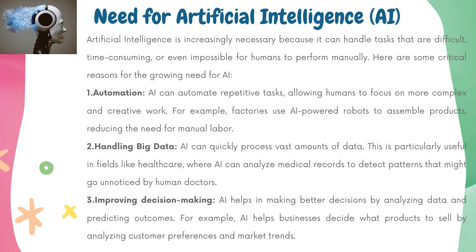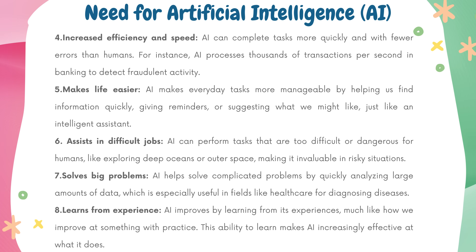Automation: AI can automate repetitive tasks, allowing humans to focus on more complex and creative work. For example, factories use AI-powered robots to assemble products, reducing the need for manual labor. Handling big data: AI can quickly process vast amounts of data. This is particularly useful in fields like healthcare, where AI can analyze medical records to detect patterns that might go unnoticed by human doctors. Improving decision-making: AI helps in making better decisions by analyzing data and predicting outcomes. For example, AI helps businesses decide what products to sell by analyzing customer preferences and market trends. Increased efficiency and speed: AI can complete tasks more quickly and with fewer errors than humans. For instance, AI processes thousands of transactions per second in banking to detect fraudulent activity.